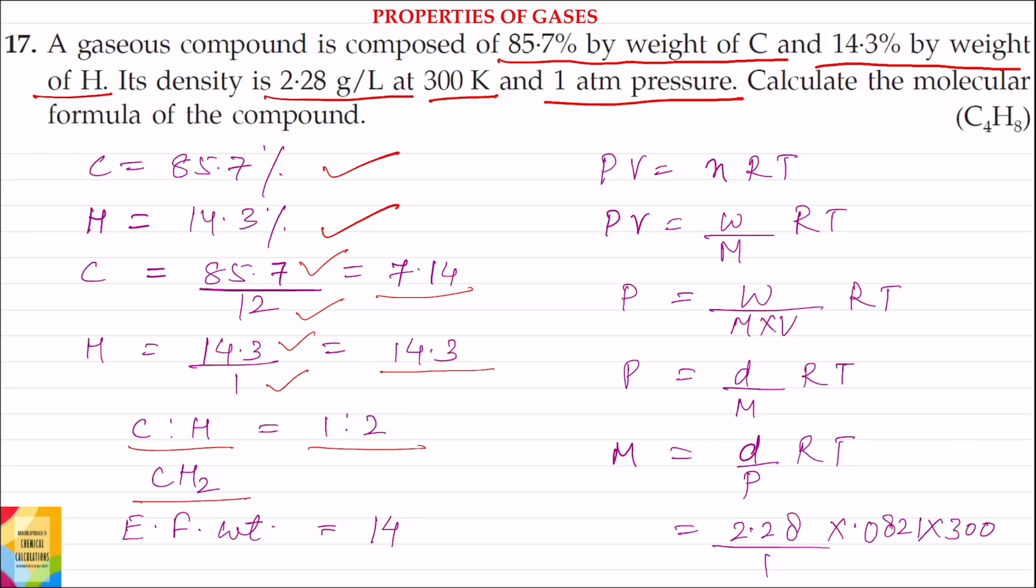From the empirical formula we can find out empirical formula weight. Empirical formula weight will be equal to weight of one carbon atom, that is 12, plus weight of two hydrogen atoms, that is 2 into 1. 1 is the atomic weight of hydrogen and this is equal to 14. So empirical formula weight is equal to 14.